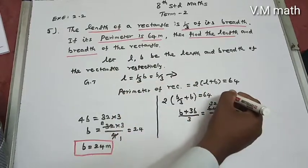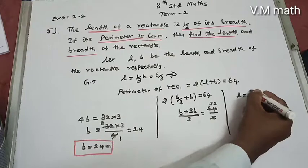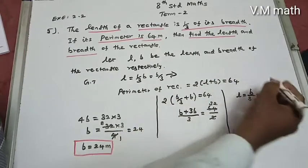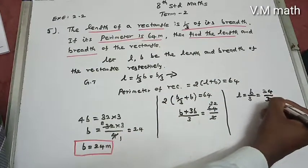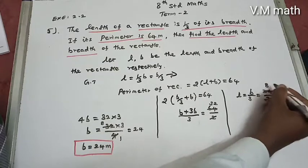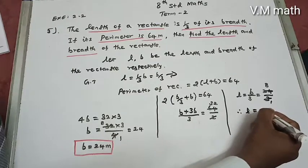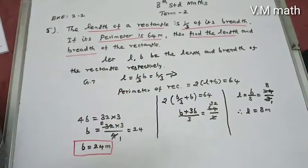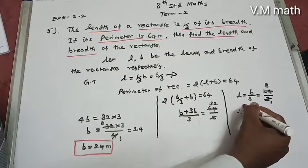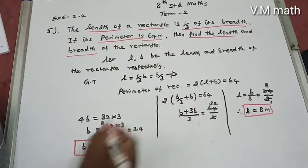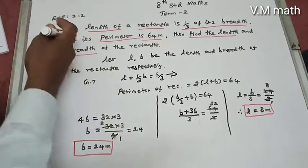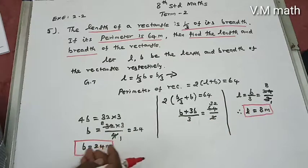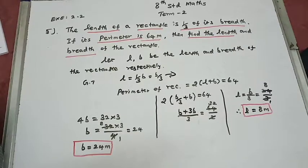For the length, L equals B by 3, and since B is already 24, we get 24 divided by 3, which equals 8. Therefore, length L equals 8 meters. So the answer for question number 5 is: length L equals 8 meters, breadth B equals 24 meters.